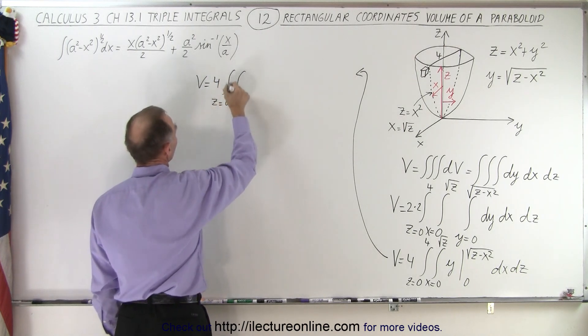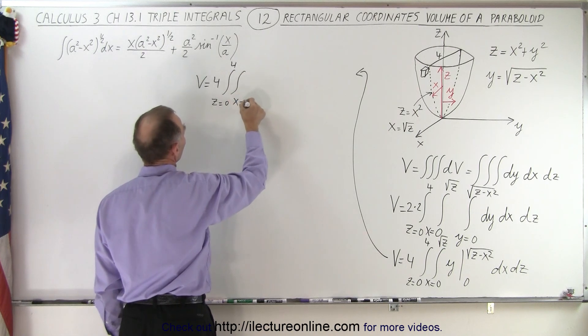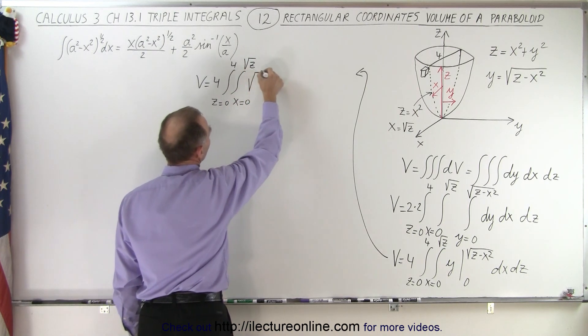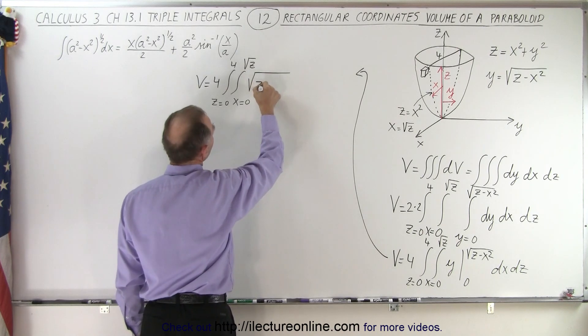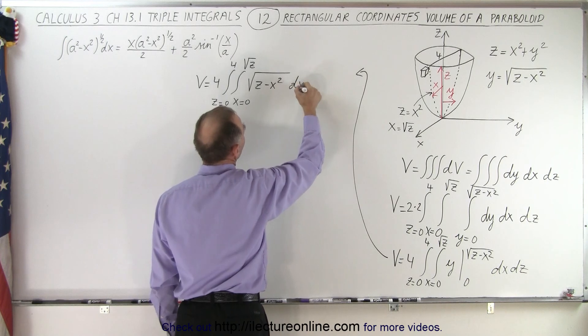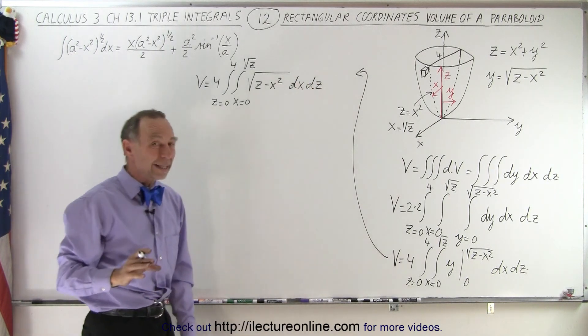That means that our volume is now equal to 4 times the double integral, z goes from 0 to 4, x goes from 0 to the square root of z, and here we end up with the square root of z minus x squared, that would be dx dz.